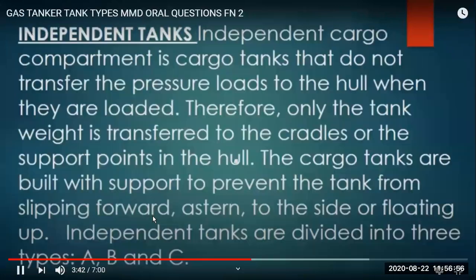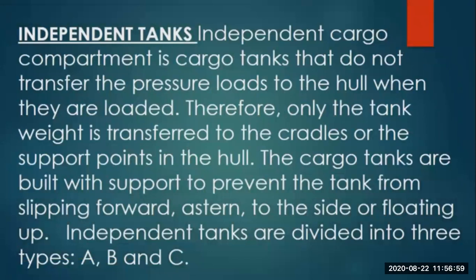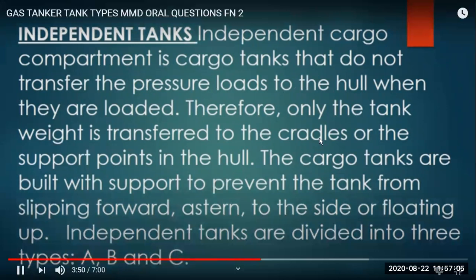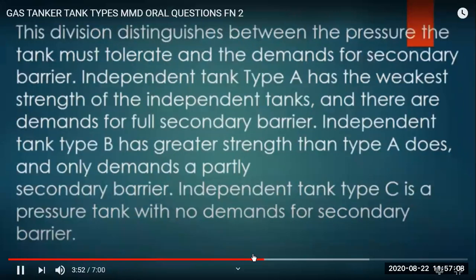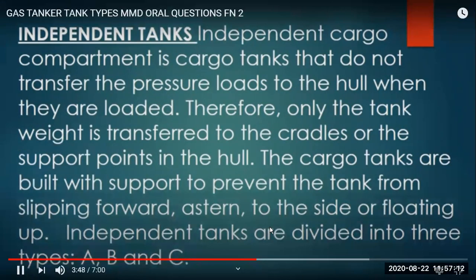Independent tanks are separated with no connection to the hull, so stresses are contained within. It's like a cradle - the tank is first placed in an empty hold like a bulk carrier's empty box, and the tank is put into that on wooden blocks or chocks, similar to a ship going into dry dock. The tank weight is transferred to the cradles or support points - the chocks or wooden blocks. Cargo tanks are built with supports to prevent the tank from slipping forward or astern.